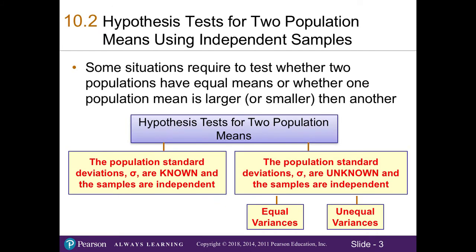Recall in Chapter 4, we learned what independent events meant — it's where neither event influences the other. Similarly, in this chapter, independent samples occur when we select samples from two or more populations in a way that the values in one sample have no influence on the values in the other sample. For instance, the exam scores in our statistics class are independent of exam scores in a Spanish class, because they have different professors, different students, and different topics being covered on the exam.